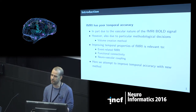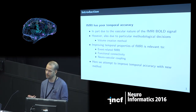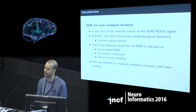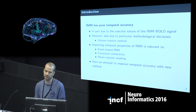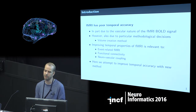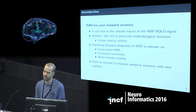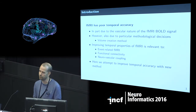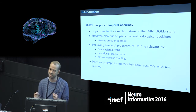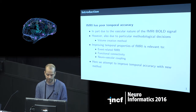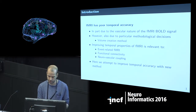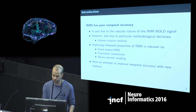Improving temporal accuracy is important for event-related fMRI, for studies of functional connectivity, and for studies of the coupling between neuronal activity and vascular responses. All three techniques are interested in the precise dynamics of the fMRI signal, so improving the temporal accuracy by which we can extract this signal would be relevant to all these types of studies. I'm here to convince you that there is a new method for doing this.